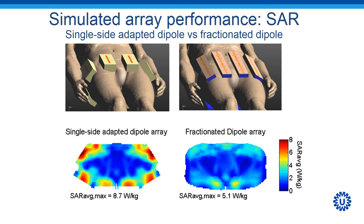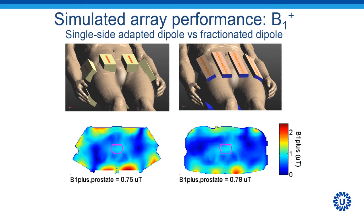We've simulated the performance of such a design in comparison to our old design, the single-sided adapted dipole antenna. It demonstrates a tremendous improvement of the SAR level, whereas if you look at the B1 plus value, it stays more or less the same.